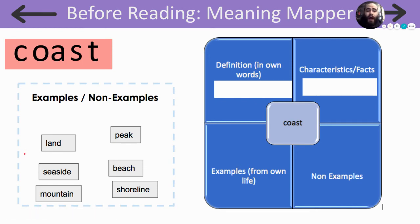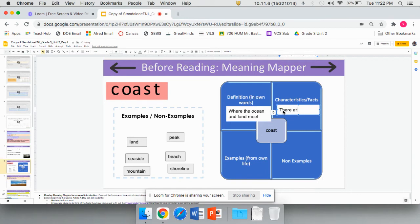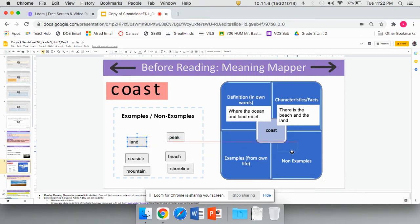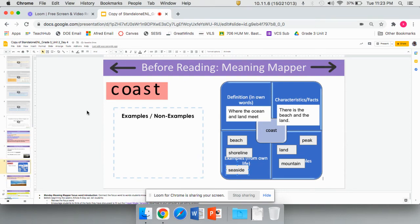Now I'm going to show you how I filled in my organizer. For the definition, I know that the coast is where the ocean and land meet. Some characteristics of the coast are there is beach and land — that's where they meet. Looking at the word choices: land is not exactly coast, though it can be part of it. A peak, which is like a mountain, is definitely not the coast. The beach is the coast, because that's where land and water meet, and so is the shoreline. But a mountain is definitely not a coast. And the seaside, which is like the beach, is also the coast.